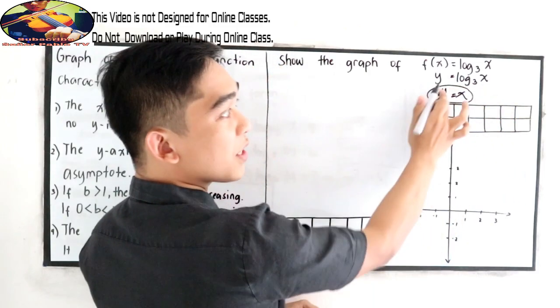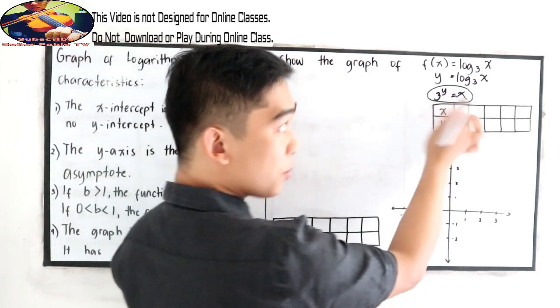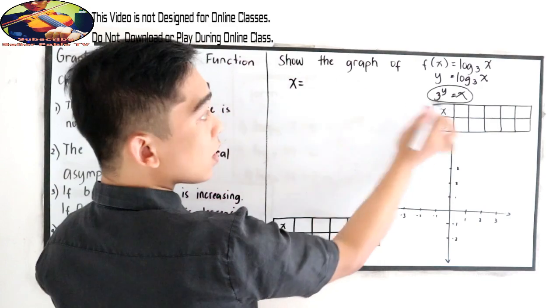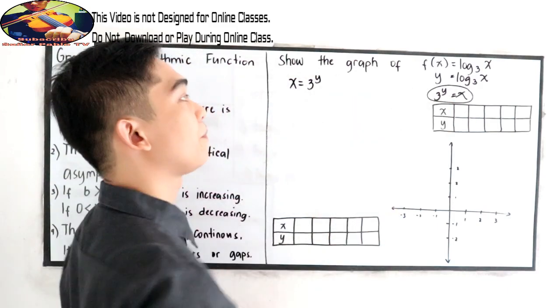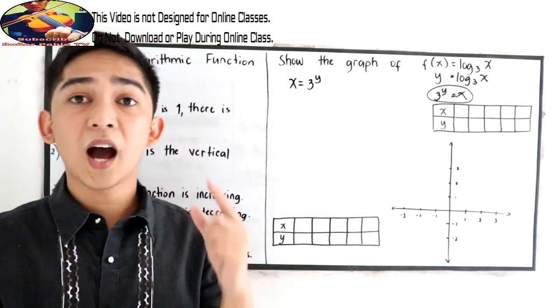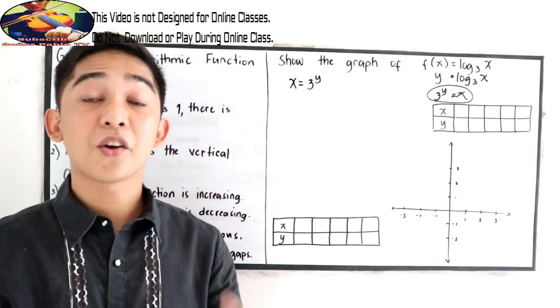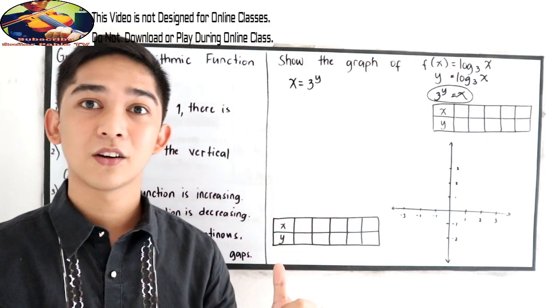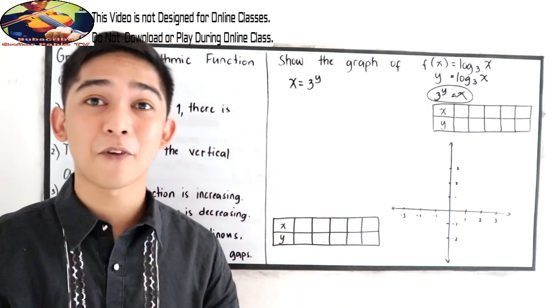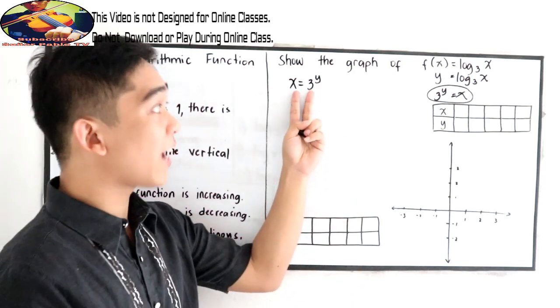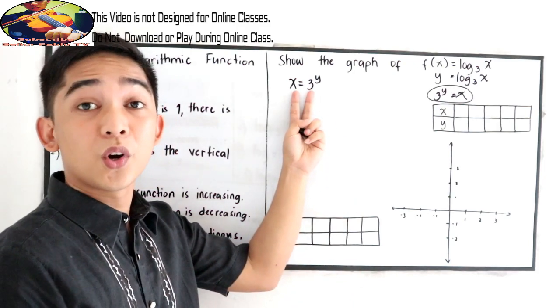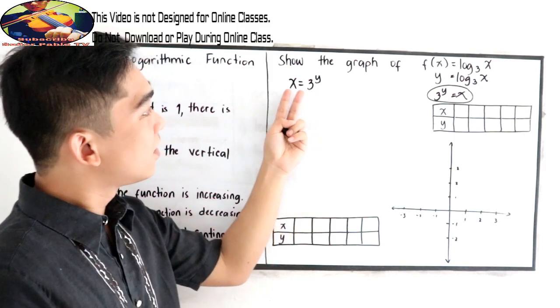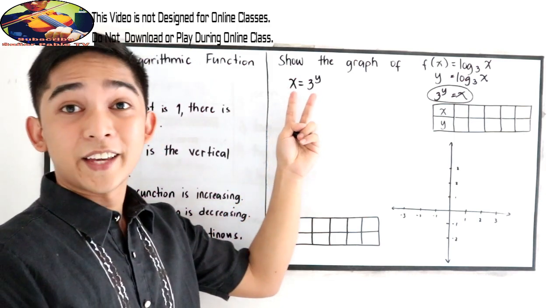Okay, 3 raised to y is equal to x. Now, the graph of logarithmic function is the inverse of exponential function. So this is our exponential form. Now, we're going to get its inverse.